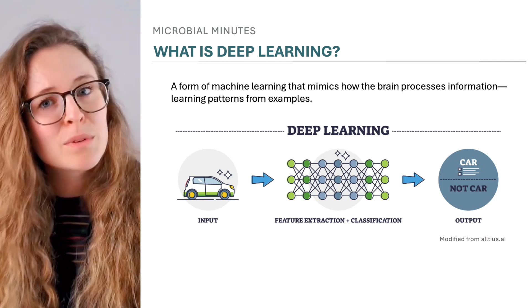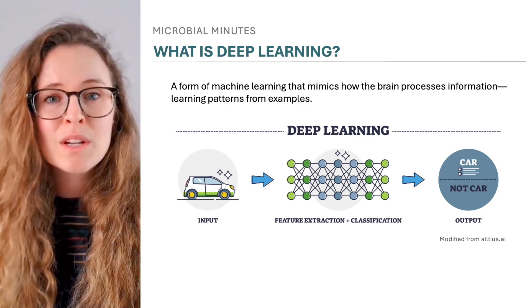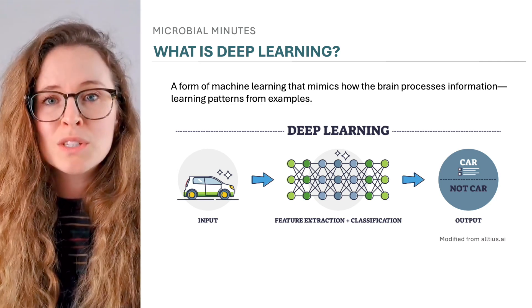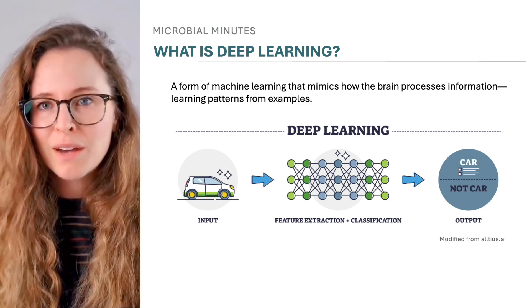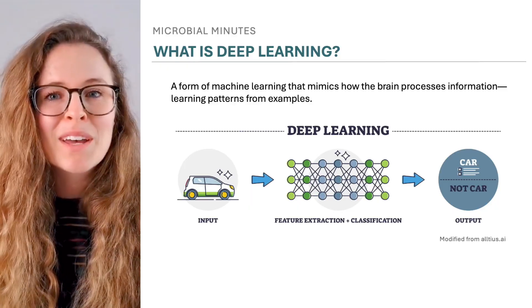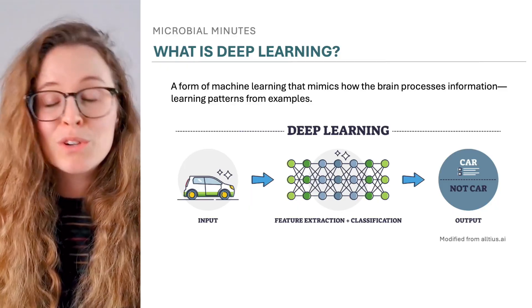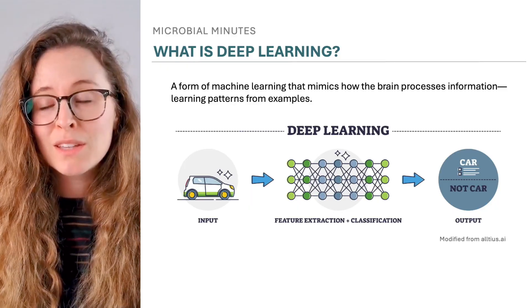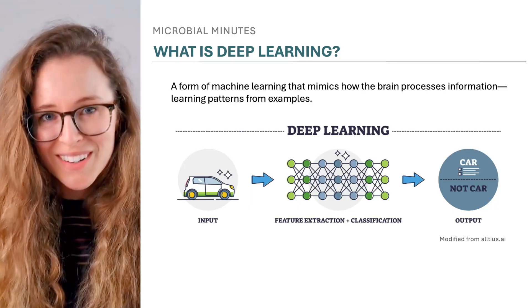For example, deep learning models can be trained on many images of cars, and after learning the patterns that define a car, the model can identify whether a new image contains a car.